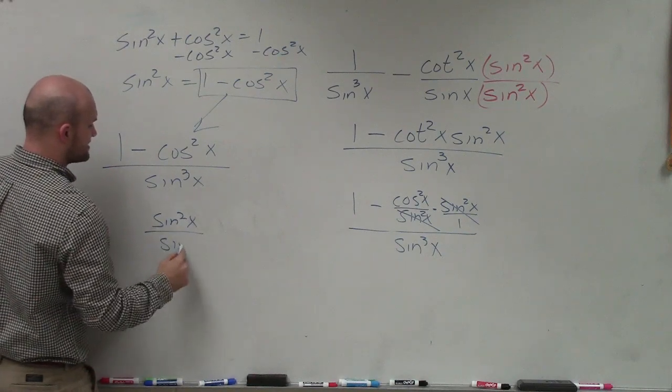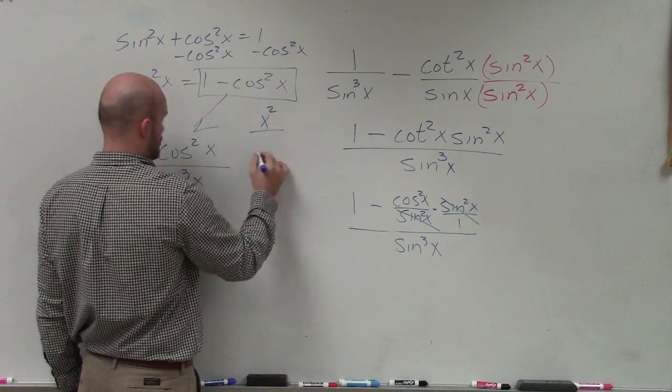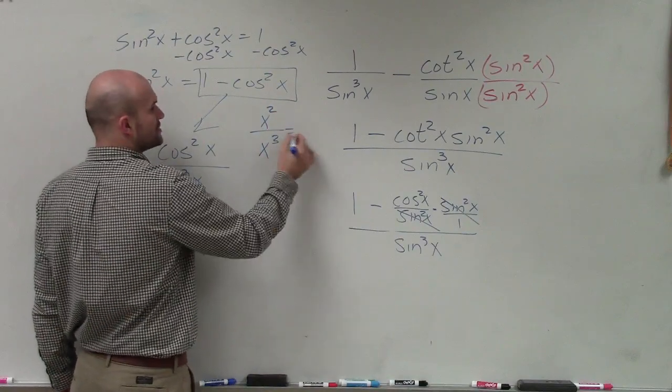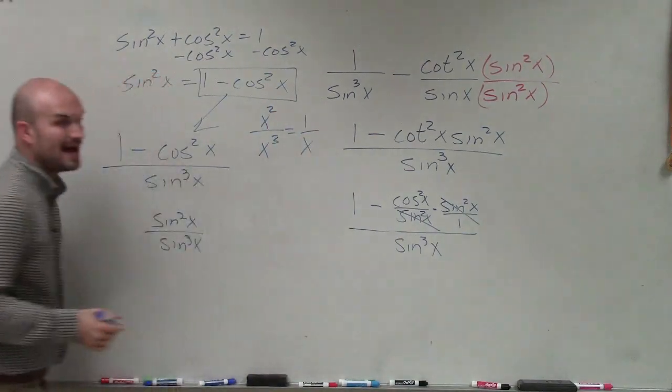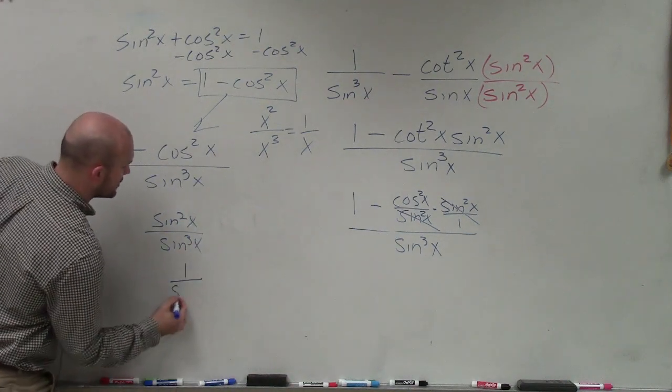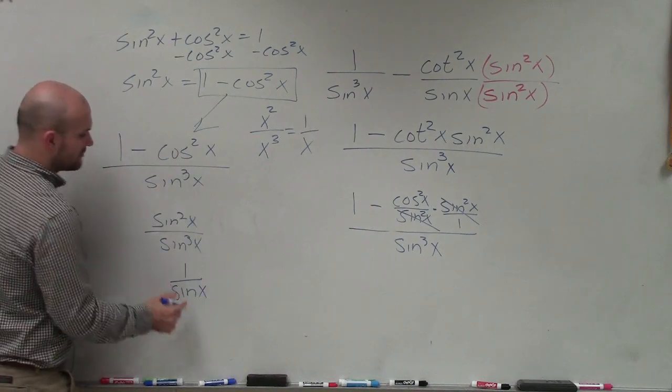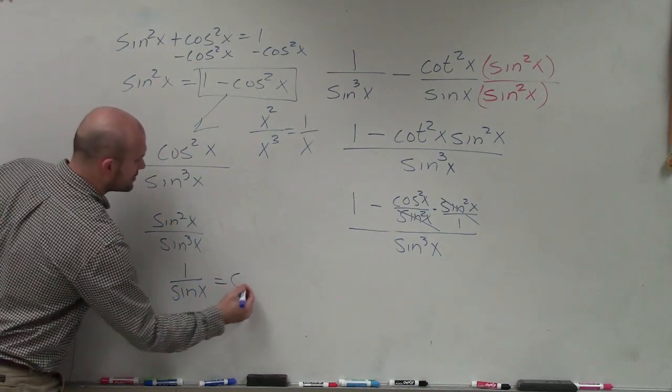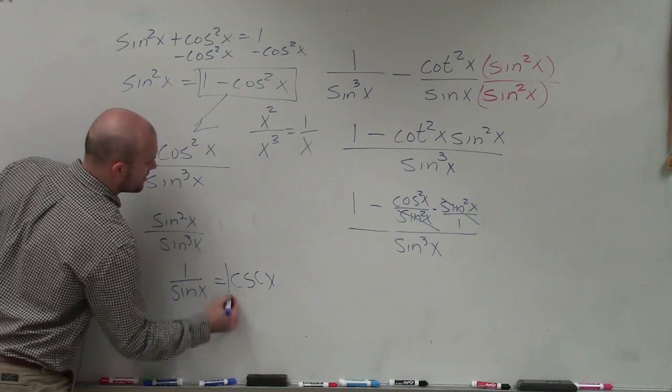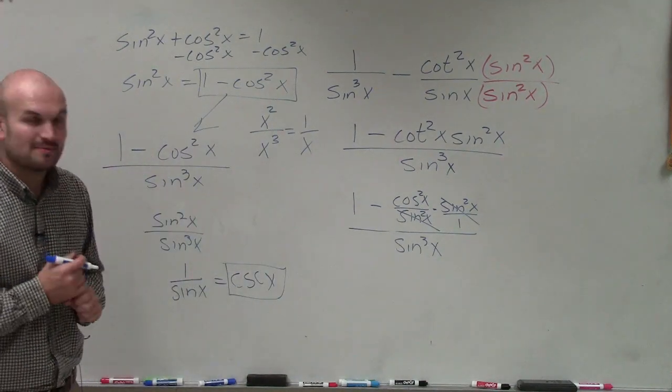Well that's just like having x squared over x cubed, which we know is just going to leave as 1 over x. So in this case, I have this now as just 1 over sine of x. And we know by the reciprocal identities, 1 over sine of x, that is just equal to cosecant of x. And that is going to be our final simplified expression. Thanks.